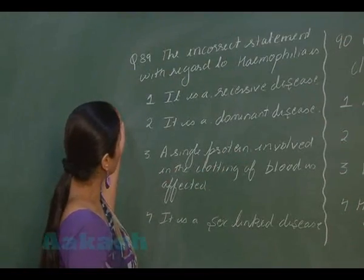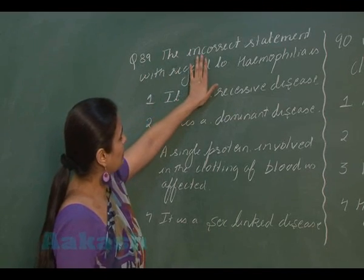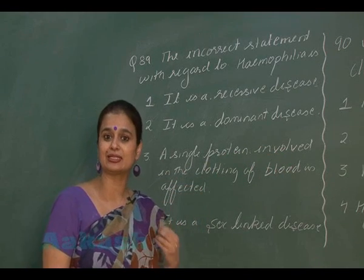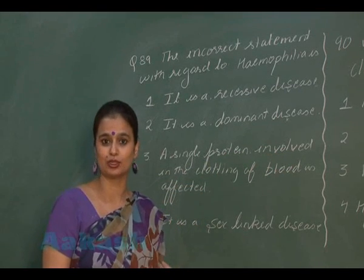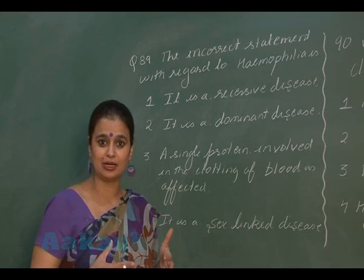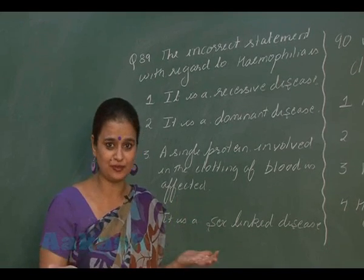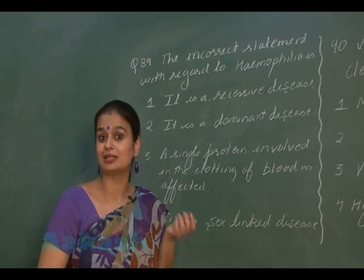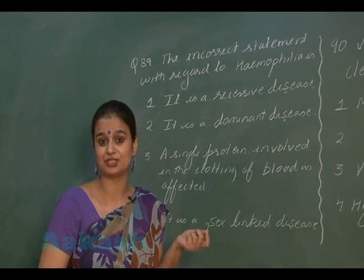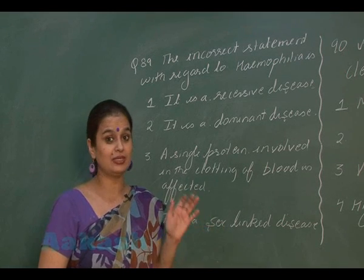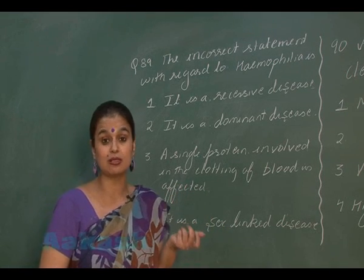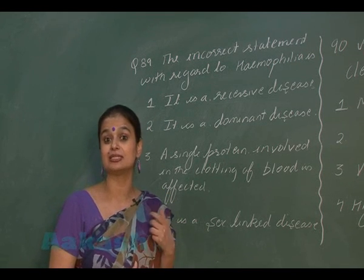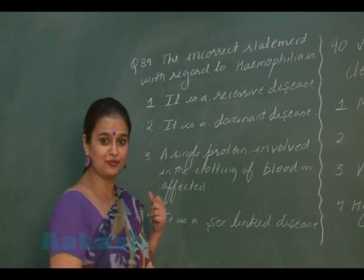In question number 89, we have to find the incorrect statement about hemophilia. Hemophilia is an X-linked recessive disorder. In hemophilia, a blood clotting factor is deficient: in hemophilia A, the deficient factor is factor 8; in hemophilia B (also known as Christmas disease), the deficient factor is factor 9.